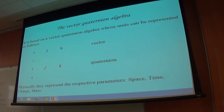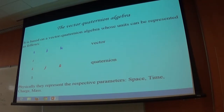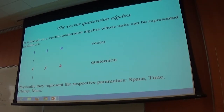This is the vector quaternion algebra — the basis of it. These are multivariate vectors, Clifford algebra vectors, quaternion-like vectors. These vectors have a real product, a full product. They're a proper algebra, not ordinary vector algebra, which isn't a proper algebra because it doesn't have a product. But this has a product. It's been around for a long while.